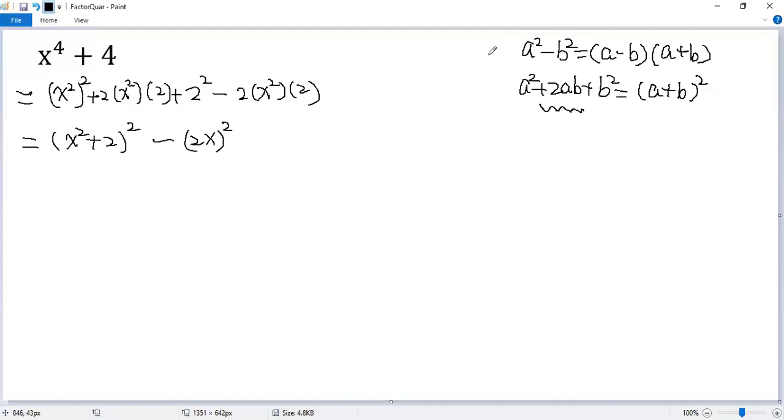Now we can use that formula. So we get a minus b, so x squared plus 2 minus b, which is 2x, times a plus b. So x squared plus 2 plus 2x.